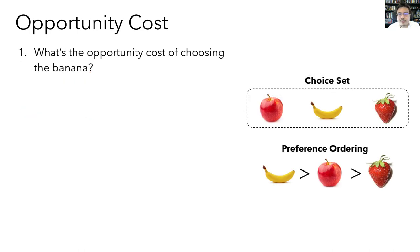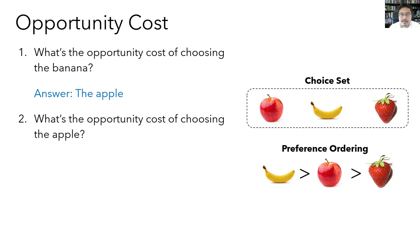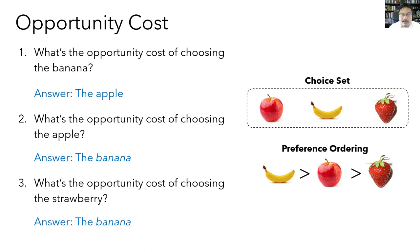Let's put this definition into practice using Henry's choice set. The opportunity cost of choosing the banana is not getting to choose the apple. What's the opportunity cost of choosing the apple? The answer is the banana — not the strawberry. Remember, opportunity cost is the best alternative option. Although the strawberry is next best after the apple, the best alternative to the apple is the banana. And the opportunity cost of choosing the strawberry is also the banana, since it's always the best alternative option.